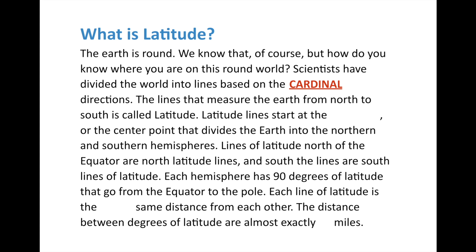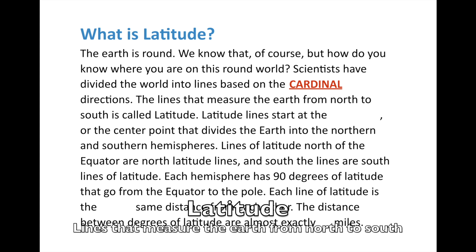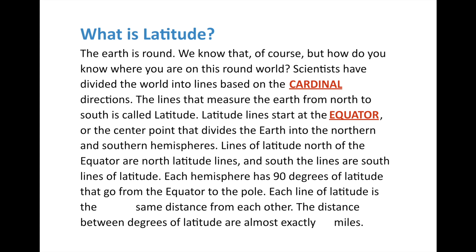The lines that measure the Earth from north to south are called latitude. Latitude lines are the ones that measure north and south — think latitude, ladder. Latitude lines start at the center point of the Earth, which is the equator, and it divides into the northern and southern hemispheres. The lines of latitude north of the equator are north latitude lines, and south of the equator are the south lines. Each hemisphere is 90 degrees of latitude that goes from the equator to their respective poles.